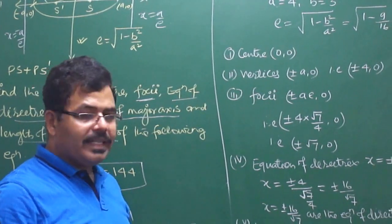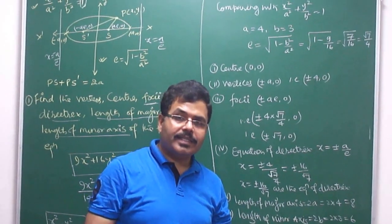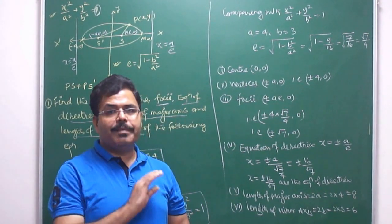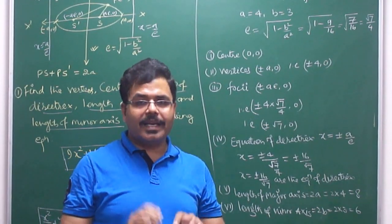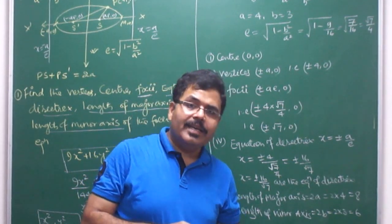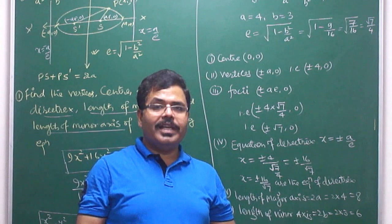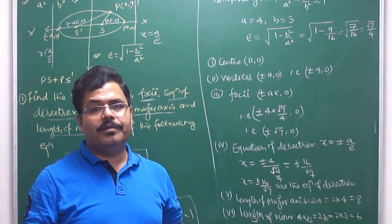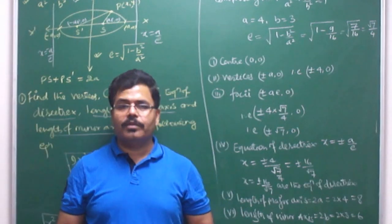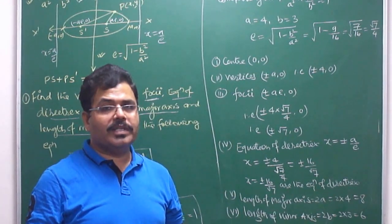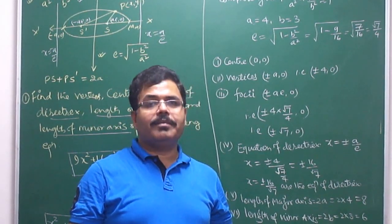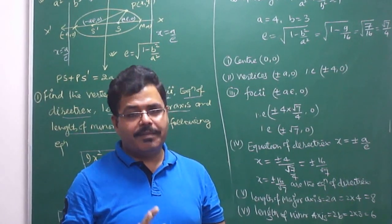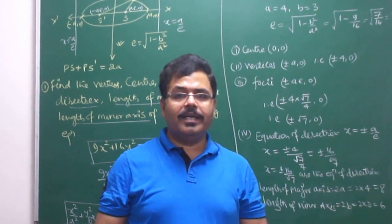All the required values — length of major axis, length of minor axis, and everything else — have been derived. Please practice this. In the next class we will do more problems of different types. This was a basic example. Memorize the formulas and bring them to the next class. Conic sections is a topic that Class 11 students find very difficult, and in IIT entrance exams, there are at least 3 to 6 questions from conic sections, so study this topic carefully. Thank you for watching.